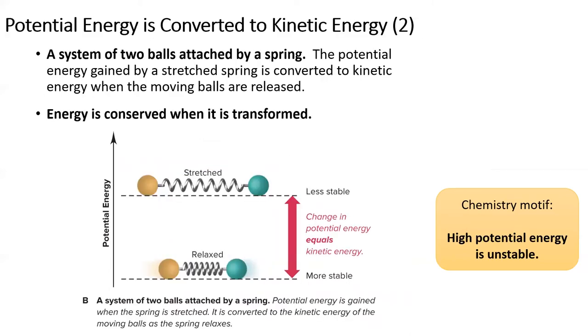When a spring is stretched or compressed, it gains potential energy and loses stability. If the spring is released, it is free to return to its relaxed state and the potential energy is converted to kinetic energy of movement.